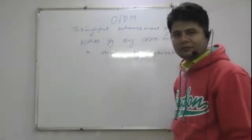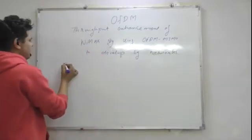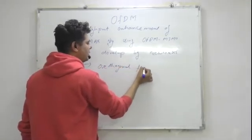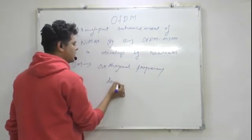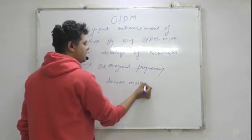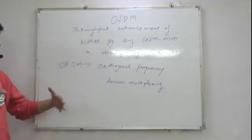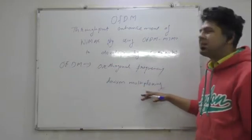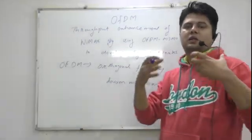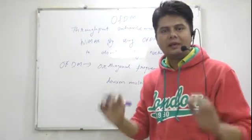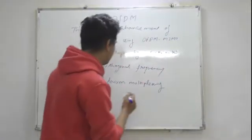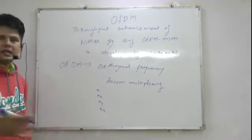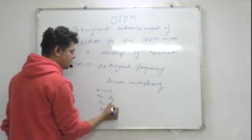So basically, what is OFDM? It stands for orthogonal frequency division multiplexing. Now I will go through the meaning word by word. First, multiplexing means the sending of parallel data via a single channel. Suppose I have N channels: N1, N2, N3, and N4, and these channels are sending data d1, d2, d3, and d4.